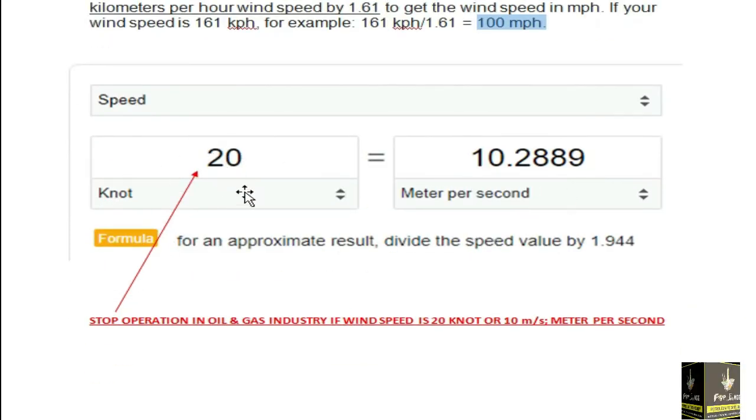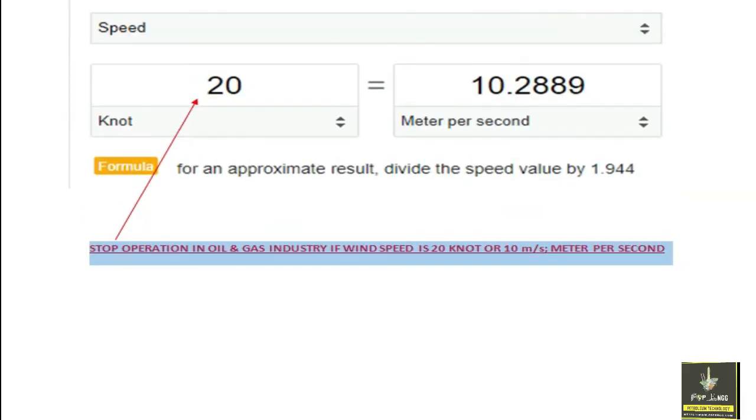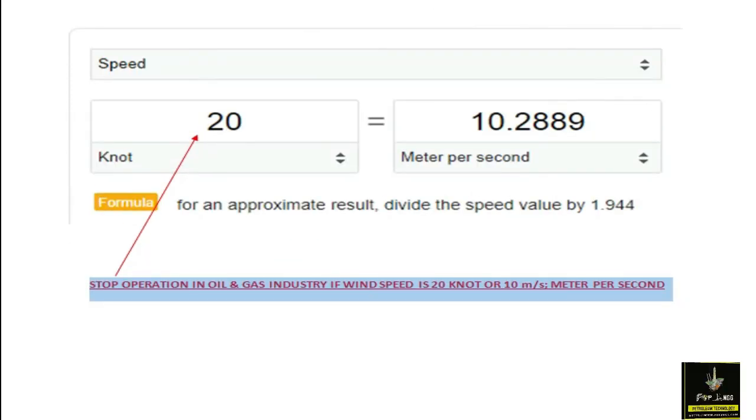If you want to convert the speed from knots to meter per second, you can directly divide it by 1.944, or you can check by Google. 20 knots is equal to 10.2889 meters per second. Please note that we stop operation in oil and gas industry if wind speed is 20 knots or 10 meters per second. I hope you understand about the windsock.